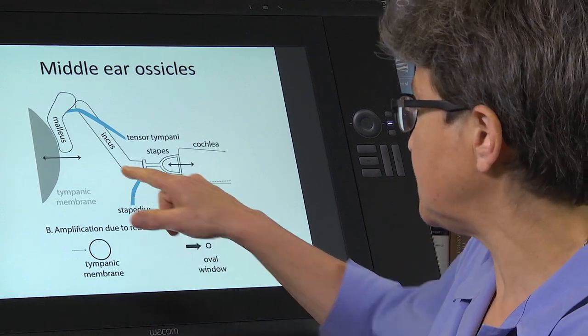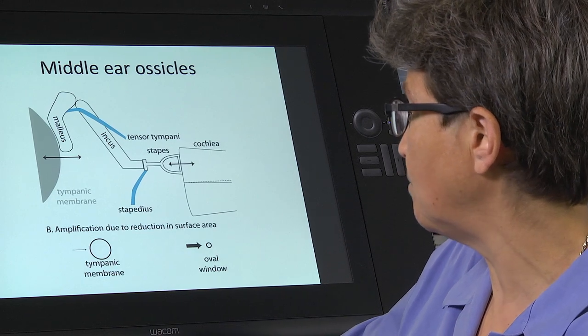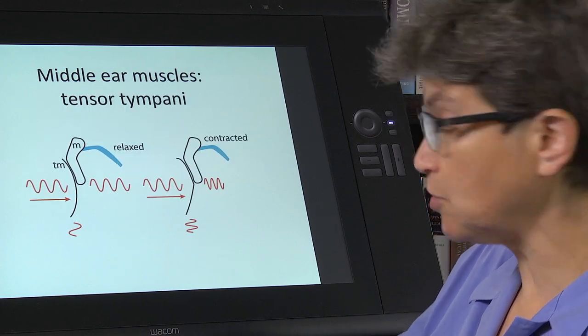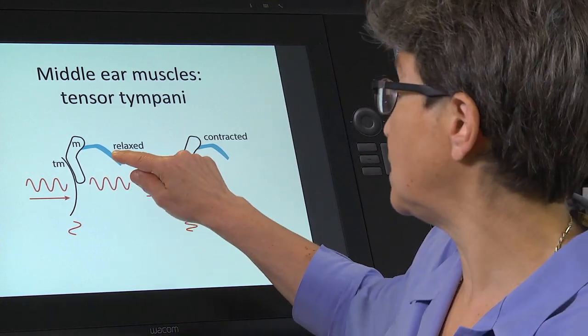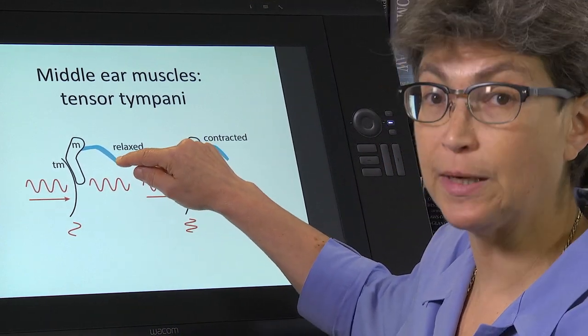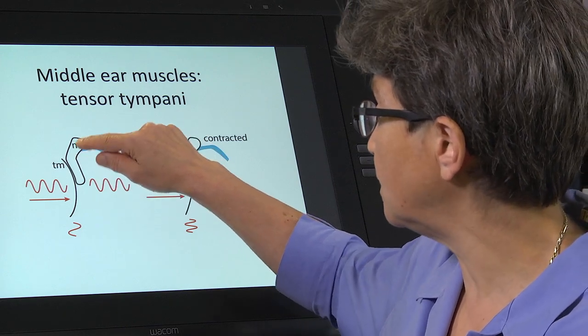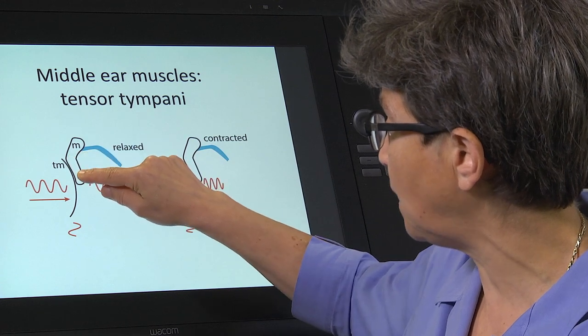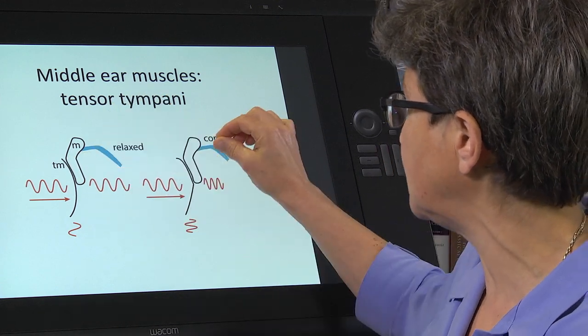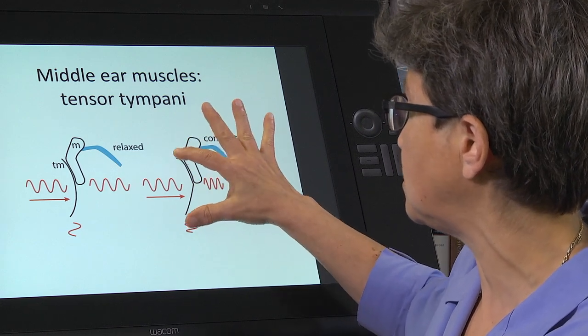Now, the middle ear has, besides the ossicles, it has two muscles. And these muscles are, remember, they're brachial motor muscles. The tensor tympani is innervated by the trigeminal nerve, and when it's relaxed, the malleus is onto the tympanic membrane. But when it's contracted, it pulls the tympanic membrane, so it stretches the tympanic membrane.